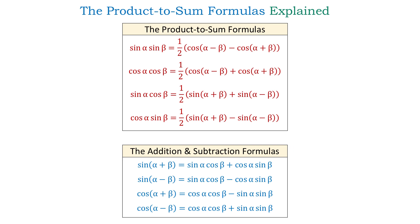These formulas allow us to convert each product into a sum or a difference. For example, the first formula is sine of alpha sine of beta equals one-half cosine of alpha minus beta minus cosine of alpha plus beta. So as you see, if on the right side we distribute one-half, then we will have a difference. Now, to derive these formulas, we need the addition and subtraction formulas that you see below. So let's see how we can derive the first formula.